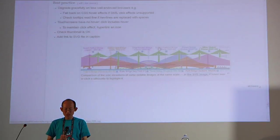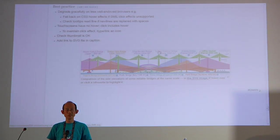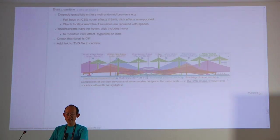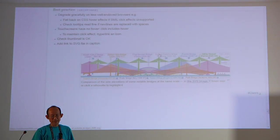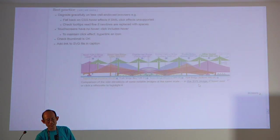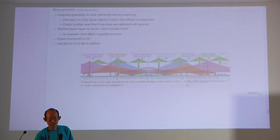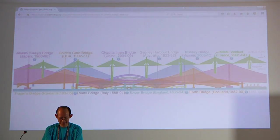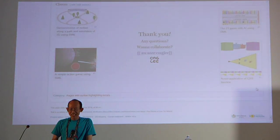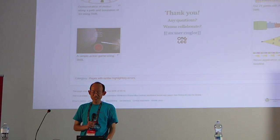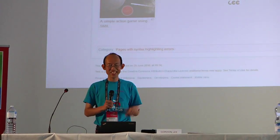How do you get readers to interact with the graphics? When they go to a Wikipedia page, they see a thumbnail and don't know it's interactive. So what I do is put a link inside the SVG image saying 'hover over or click the silhouette to highlight it', prompting them that if they want to interact more, they can click the link and it loads the SVG page directly. Thank you for coming — I have about eight minutes for questions.